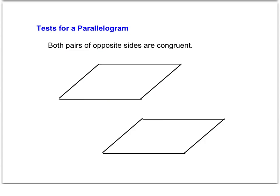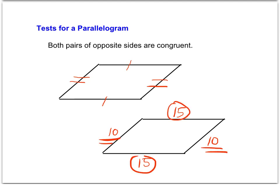Our second test is about opposite sides being congruent. We can just be given congruency marks, and that's enough — if both pairs of opposite sides are congruent, then yes, it is a parallelogram. We could have just congruency marks, or more detailed information with specific measures, but either way both situations confirm opposite sides are congruent, so it is a parallelogram.